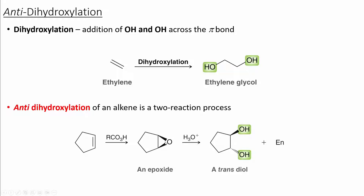An epoxide is formed first, and then oxygen can undergo nucleophilic attack of the peroxide. Once again, we see a trend where a three-membered ring is formed as an intermediate. Whenever this occurs, the nucleophile will attack from the back face and create the anti-addition trans product.